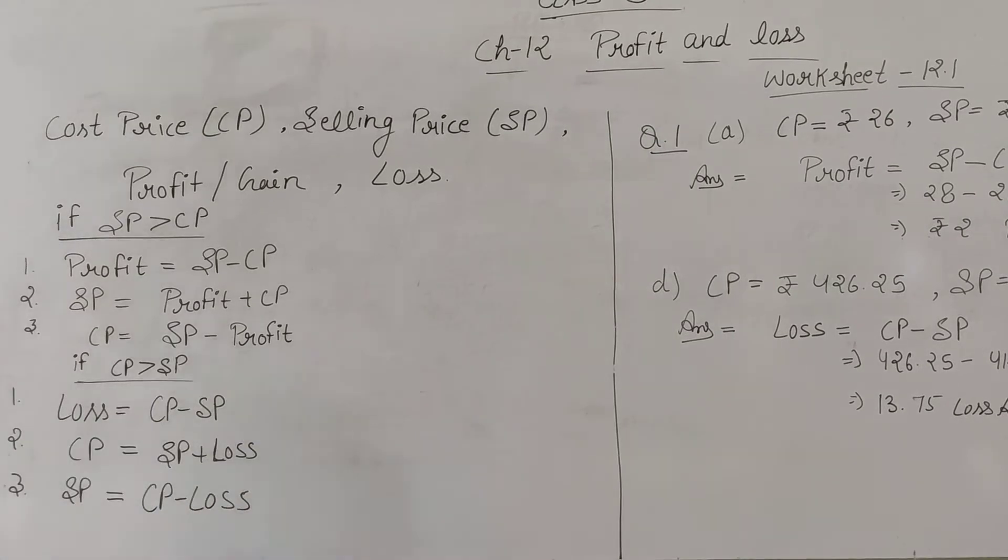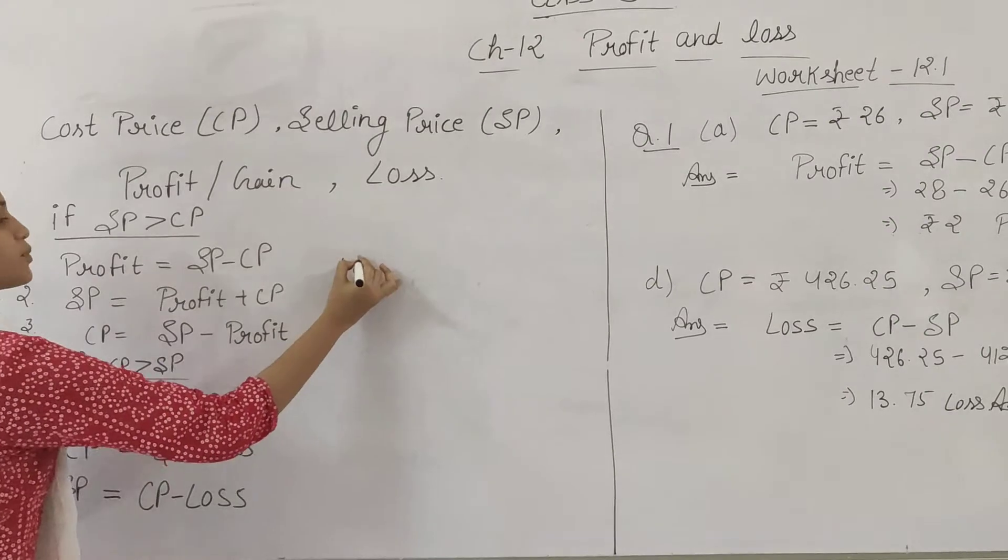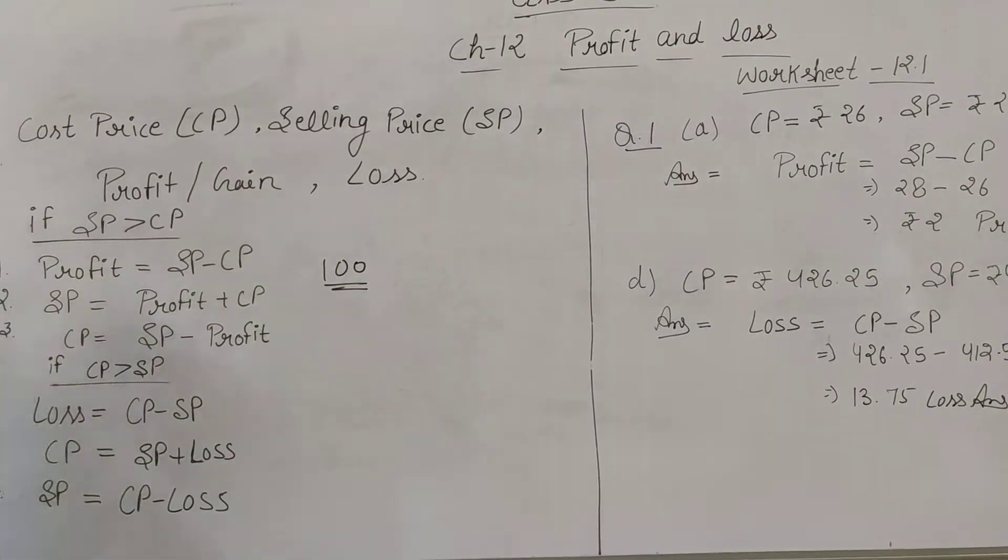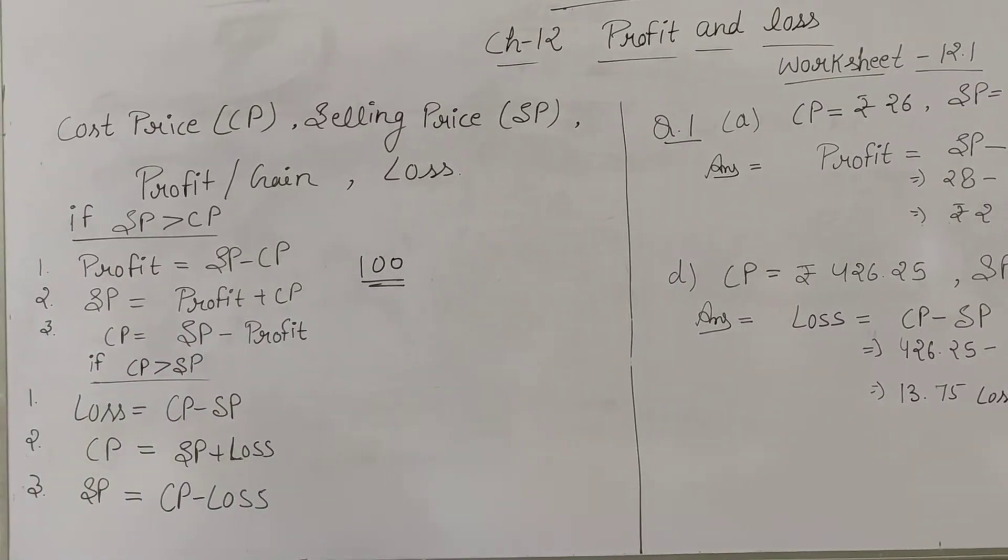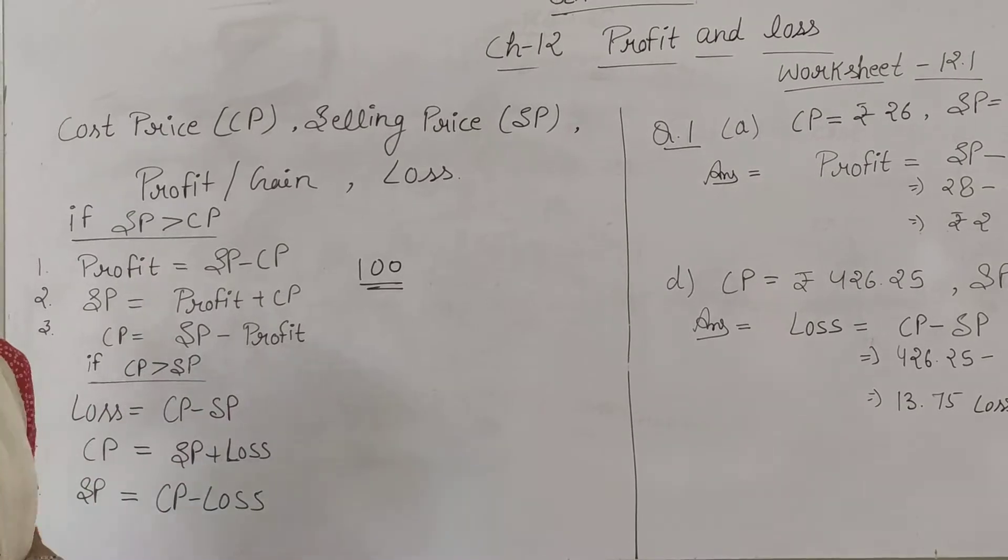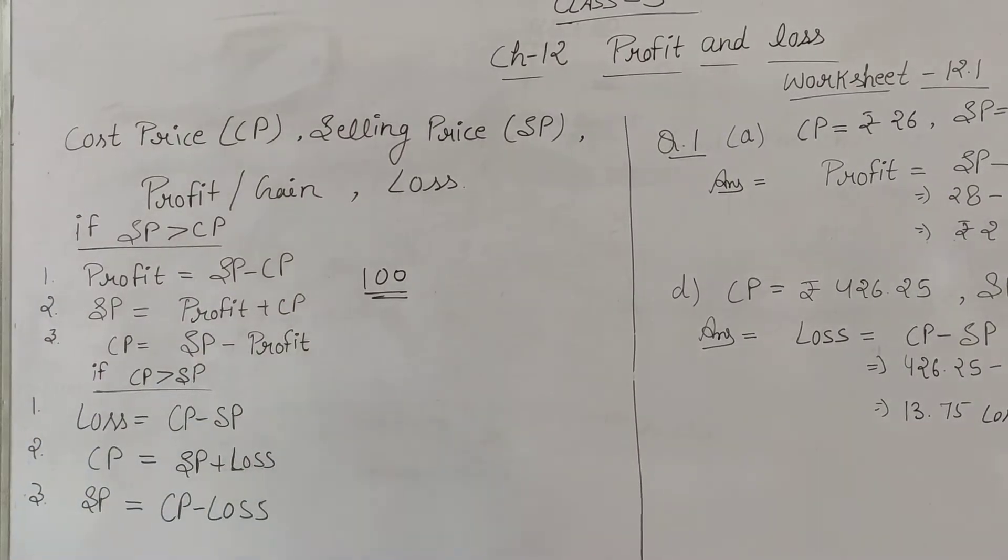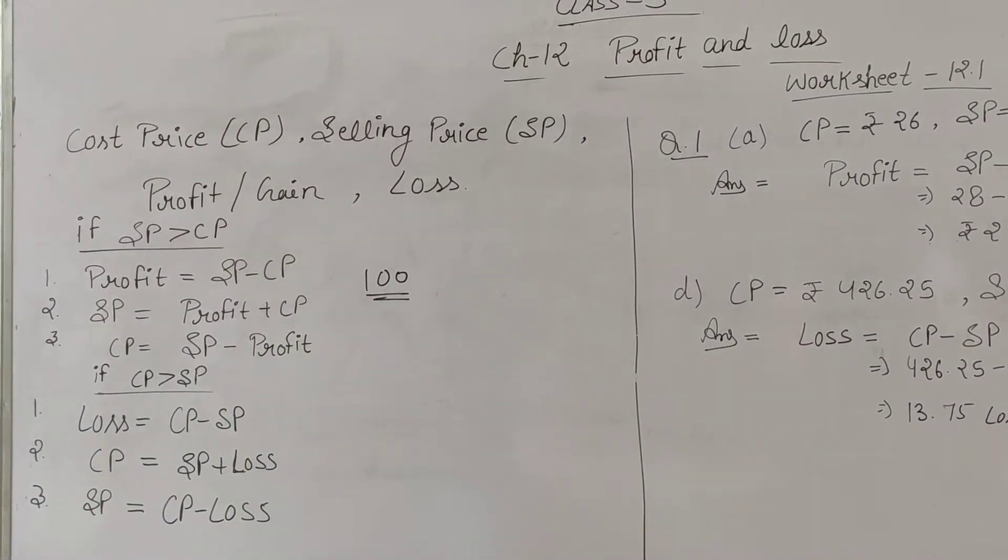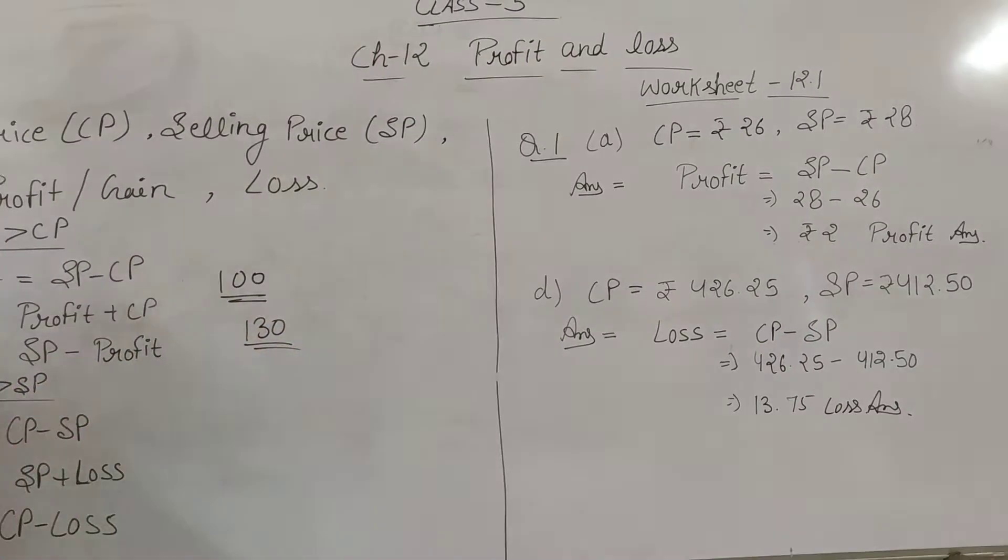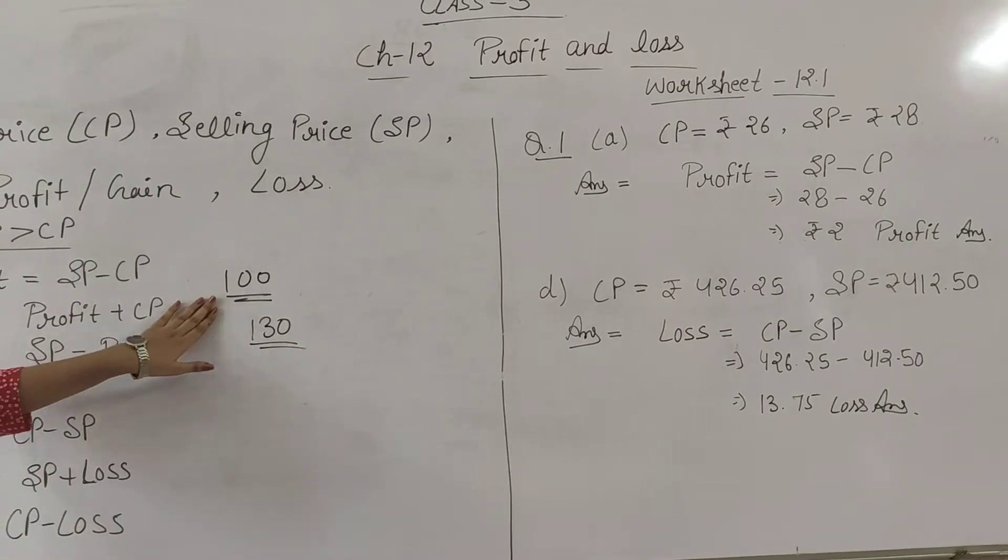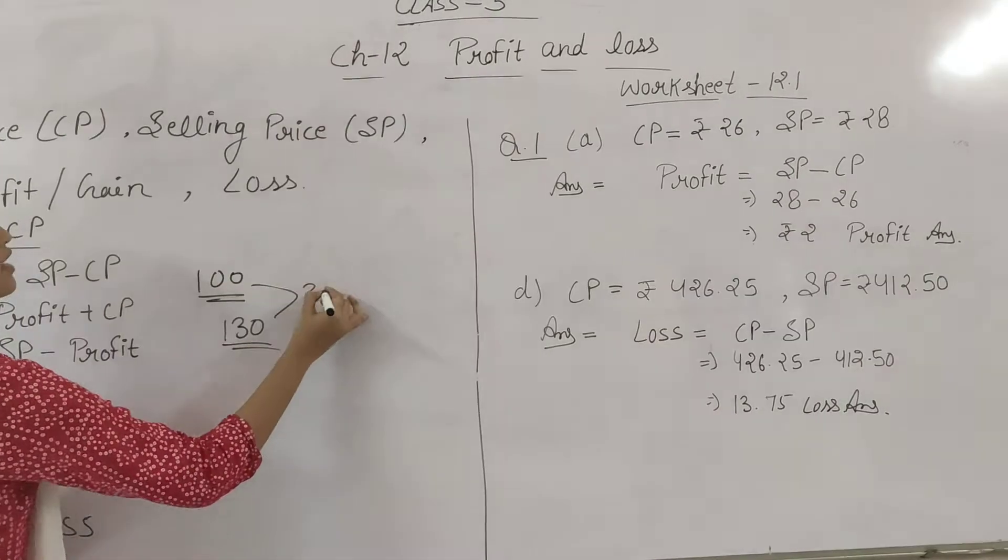For example, suppose you go to a market and buy something. You buy an item for 100 rupees, then sell it for 120 rupees. What happens? You earn 20 rupees more than what you paid. If you buy for 100 rupees and sell for 130 rupees, you saved 30 rupees. This is about buying and selling items.